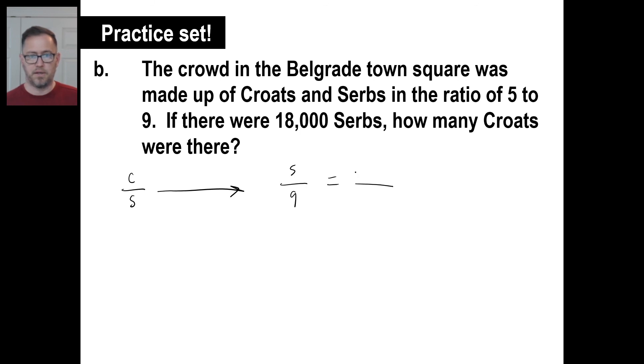We're going to put an equal sign, and we're going to have S. And this one will be 18,000 Serbs. And then this will be C here. That's our setup. And again, you can do the trick if you want to. It won't always work.